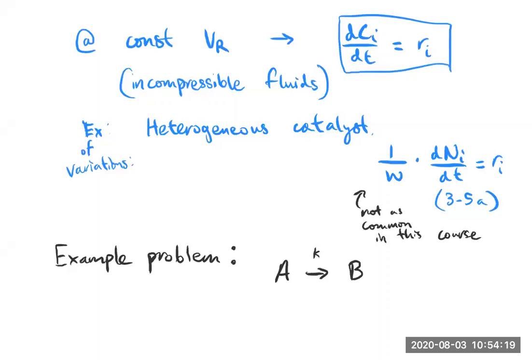then it doesn't really matter what A and B are. So let's say that there's a general rate in this case, a species independent rate that is KCA. In other words, this is an elementary reaction where the species dependent rate of formation or the rate of formation of species A is going to be happening at minus KCA.